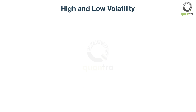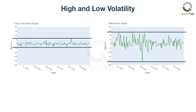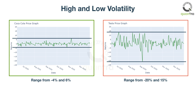For example, the daily returns of two different stocks are shown. In the left graph, the daily returns are hovering between minus 4 and 6%. Whereas in the second graph, the returns are moving from minus 20 to 15%. This means that while you could gain 15% in a single day, you could also lose 20%. This makes Coca-Cola less volatile than Tesla, as the daily returns of Coca-Cola are not prone to extreme fluctuations.